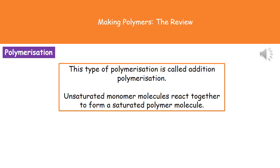The type of polymerization we're looking at here is called addition polymerization, because we're adding together lots of monomers. What we need to remember is that those monomer molecules are unsaturated, because they've got a double bond present. It's because they're unsaturated and have that double bond that they can react together to form the saturated polymer molecule. Remember, saturated means it's all single bonds.